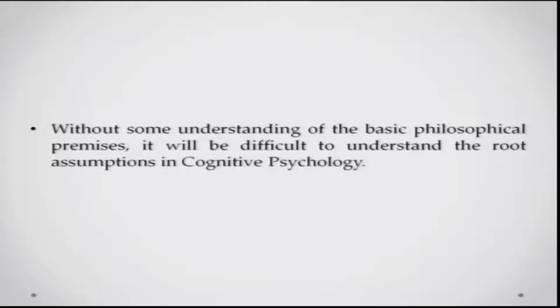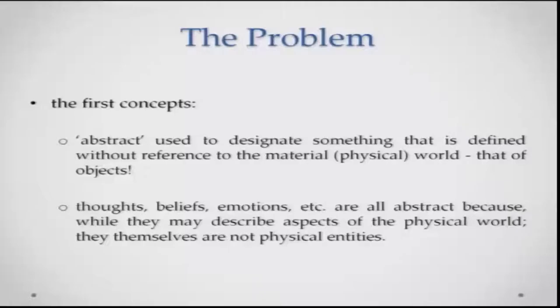To really achieve that feat, it will be important for us to get some philosophical understanding of what basically this inner world and this material world really means. The first concept to understand is the concept of abstractness. Abstractness basically is when you define something without a reference to the material world, without a reference to the physical objects that are there in the material world. Thoughts, beliefs, and emotions are all abstract because while they sometimes describe people or aspects of the material world, they do not need those material aspects to exist.